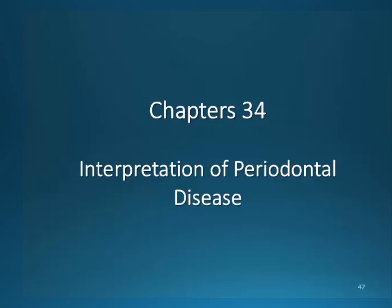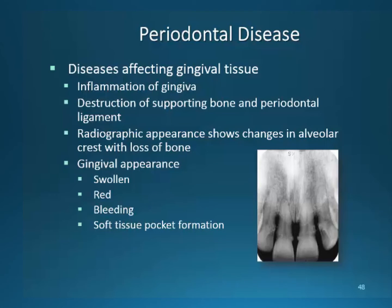We've finished our interpretation of decay and are moving into Chapter 34, which covers the interpretation of periodontal disease. Periodontal disease affects the gingiva and periodontal structures, causing inflammation and bone loss. It is detectable on radiographs, but like dental caries, destruction must be advanced enough to detect on film. The alveolar crest is where you will find the initial signs of the disease. The nature of a parallel technique provides excellent visualization of the severity of periodontal disease, and the lack of distortion is why it is recommended.